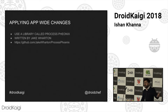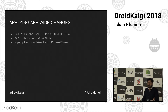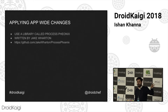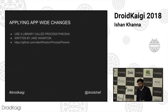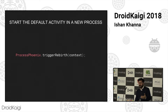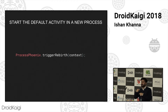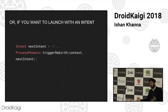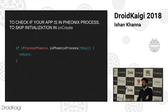Applying app-wide changes: now we know what we want to do, but one thing is — if I throttle the network to slow down requests, how do I make sure the next requests are slowed down, because you might have initialized everything way earlier. This is where a library called Process Phoenix, developed by Jake Wharton, comes into play. It can allow you to start a default activity in a whole new process. You don't have to hit the back button, put the app in the background, clear it, and run it again. You just use this — it'll rebirth the activity. Or if you want to launch with an intent to go somewhere else or pass info when it's restarting, you can do that. You can also check if you're already in the process and just return.